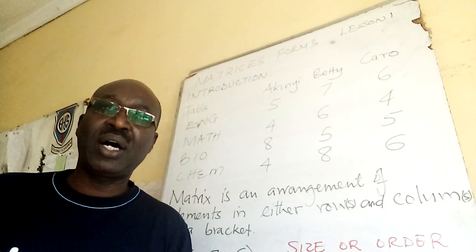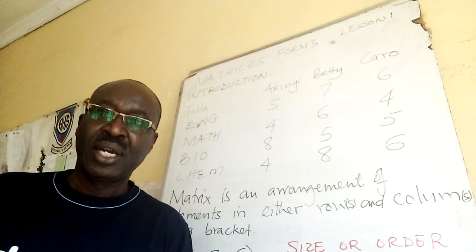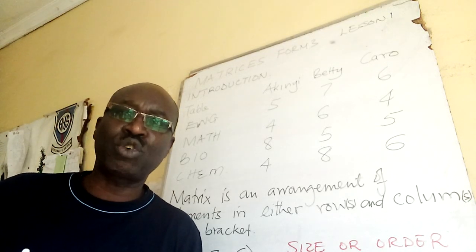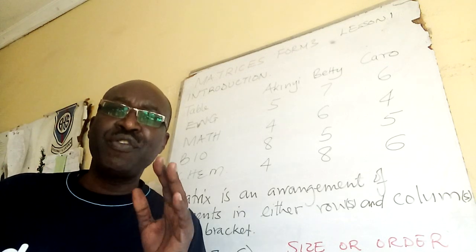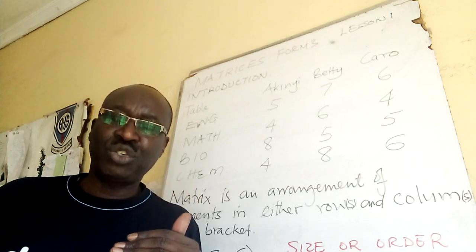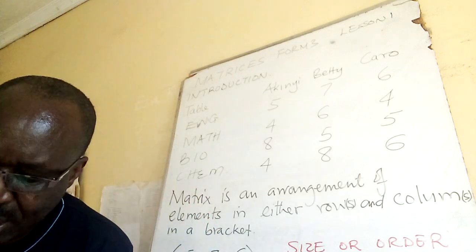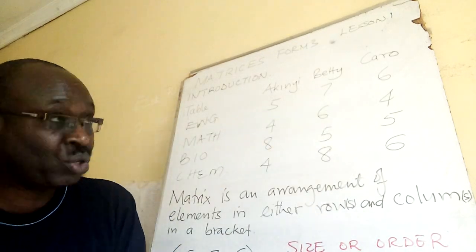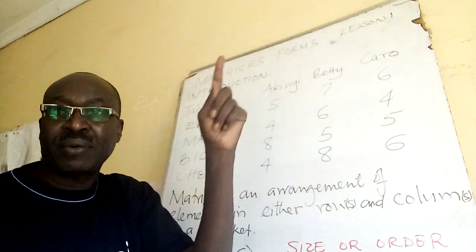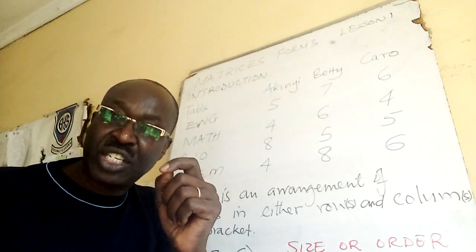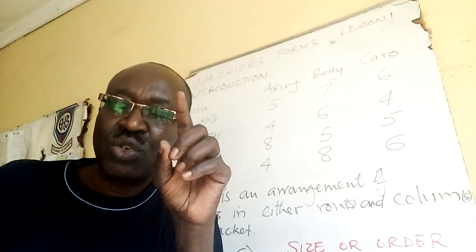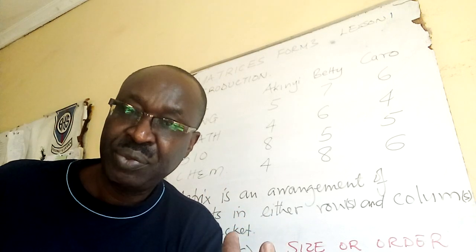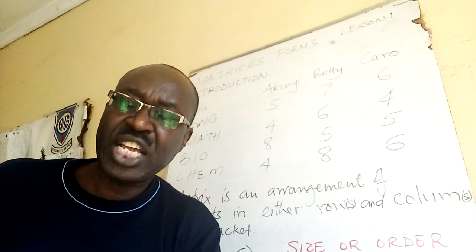Welcome folks to our lesson on matrices. This lesson is courtesy of one of you who requested that I do matrices from scratch, so even if you have not done matrices, pay attention. Matrices is a topic in Book Three, Topic Eight, Form Three. This is the first lesson of matrices in Form Three. By the end you should know what a matrix is, what an element is, and what order means.